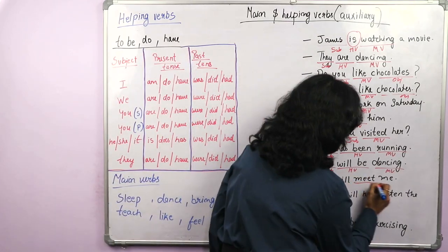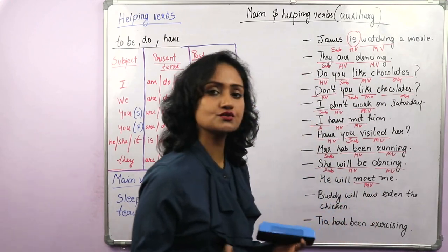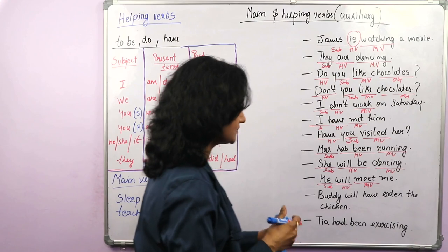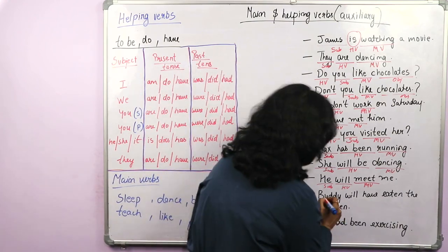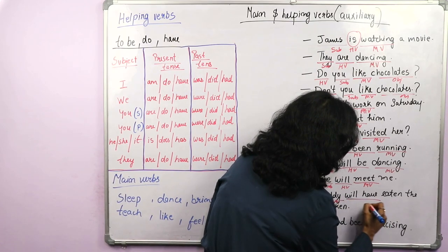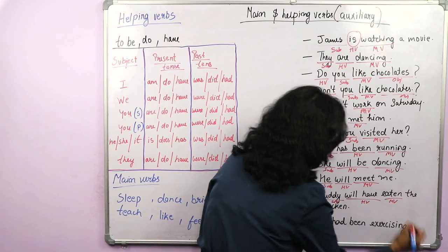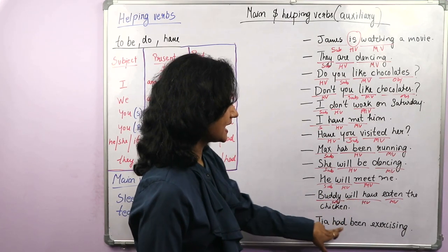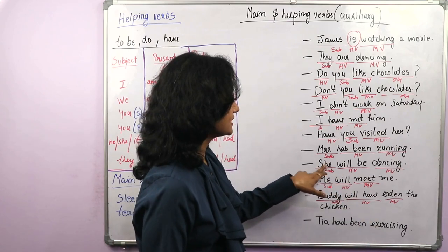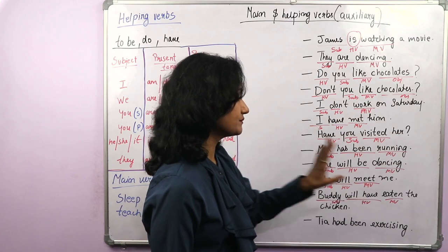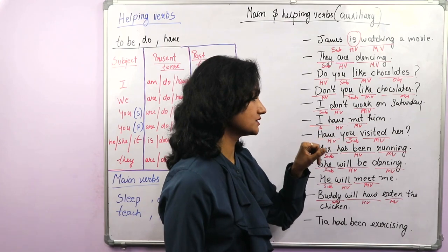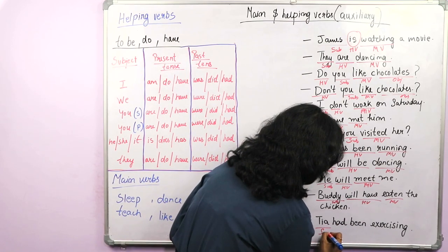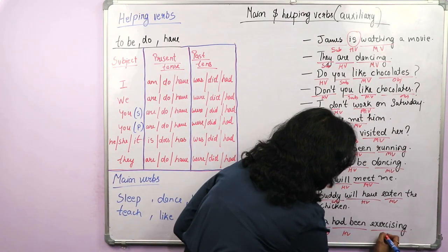'He will meet me' — he is the subject, will is the helping verb, and meet is the main verb. 'Buddy will have eaten the chicken' — Buddy is the subject, will have is the helping verb, and eaten is the main verb. 'Tia had been exercising' — Tia is the subject, had been is the helping verb, exercising is the main verb. This is past perfect continuous; will have eaten is future perfect; he will meet me is simple future; Max has been running is present perfect continuous.